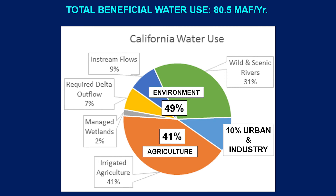Water productivity has been increasing — from $680 per acre-foot in 2000 to $910 per acre-foot in 2010. There is a push toward higher productivity, and one key factor enabling this increase is moving toward higher-precision irrigation systems like drip and micro-irrigation, away from surface irrigation.